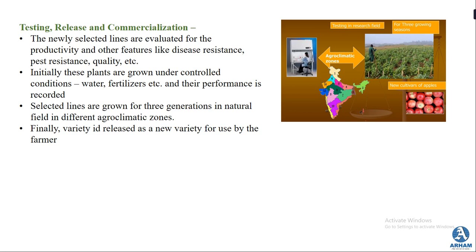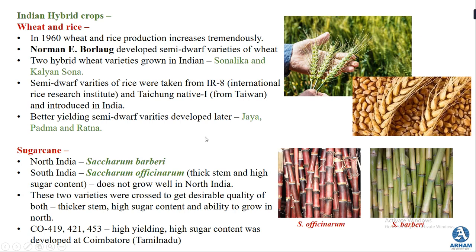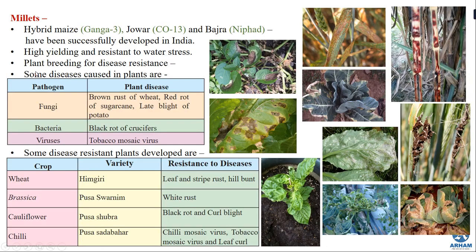This is the process of hybridization that we studied. We also studied certain Indian hybrid crops grown in India: wheat and rice crops, hybrid sugarcane, millets including hybrid maize, jowar, and bajra. We also studied diseases caused to plants and the disease-resistant plants developed and grown in India.